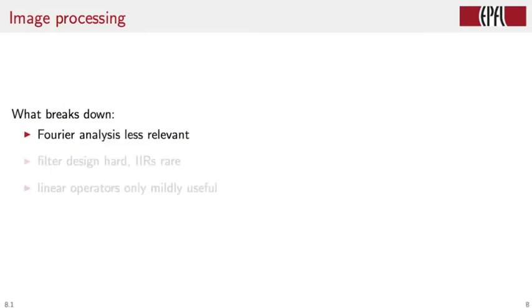What works less well in image processing is that, for instance, Fourier analysis, which algorithmically is just an extension of the 1D case, becomes much less relevant in the case of images. Filter design is much harder as well, and IIR filters are rare. And linear operators are only mildly useful. And the reason is images are very diverse signals.